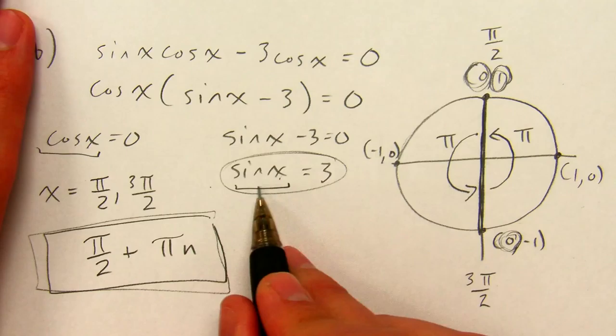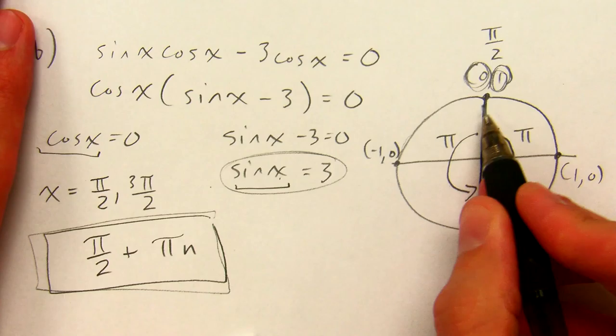So let's see. If I go up to pi over 2, the y value is... I'm sorry, where is the y value 3? If I go up to pi over 2, the y value is 1. That's not big enough.